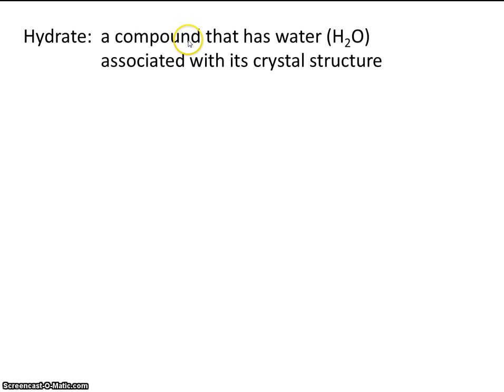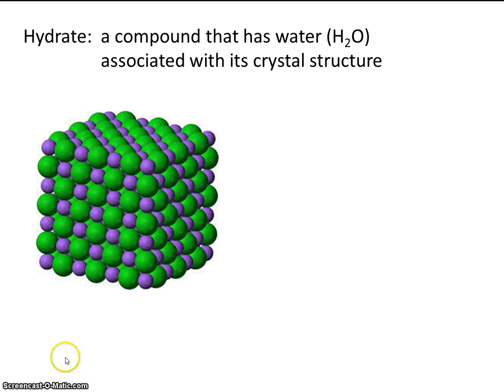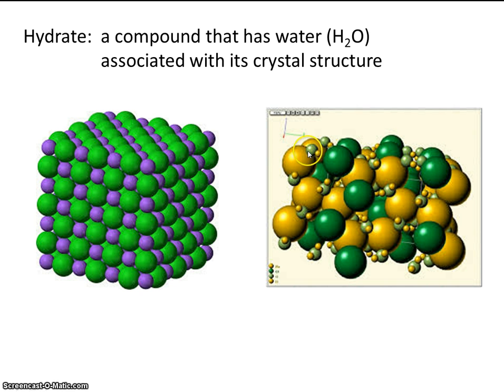A hydrate is a compound that has water associated with its crystal structure. For example, here's a crystal structure. We may have sodium chloride, sodium chloride, sodium chloride, sodium. Let's contrast that with this salt crystal here. This salt crystal also has repeating units, but you'll notice that there's water molecules here somehow associated with the crystal, either on the crystal or in the crystal.